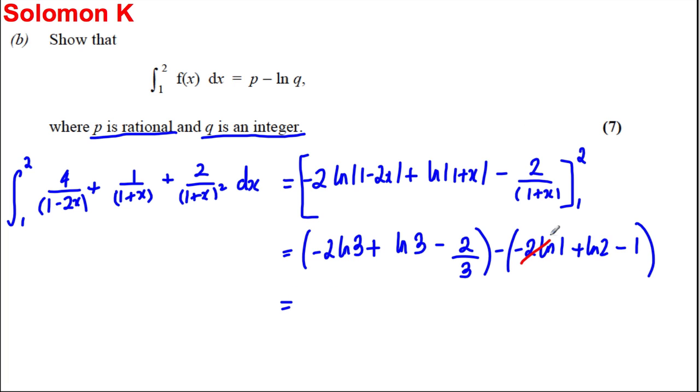ln 1 is 0, so that disappears. Here we've got negative 2 ln 3 plus ln 3 minus 2 thirds. These two clearly combine to negative ln 3, subtract 2 thirds, then subtract ln 2, and then subtract negative 1, which would be plus 1. So we've got negative ln 3 subtract ln 2, and then negative 2 thirds plus 1 is plus 1 third.